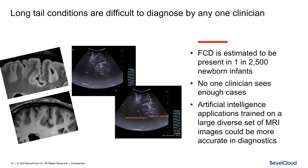Long-tail conditions are very difficult to diagnose by one clinician. This is a condition called focal cortical dysplasia — it is a brain lesion. That MRI scan on the left is pointing to the lesion. It presents in only about 2,500 newborns per year. The implication of this lesion is that the kid will have epileptic fits. There is a kid in Florida right now, about 12 years old, who has an epileptic seizure about three times a day, and at night he wakes up screaming.